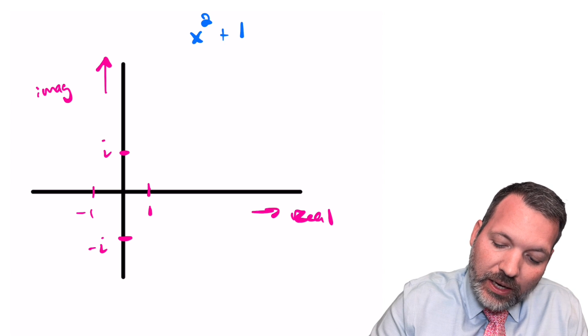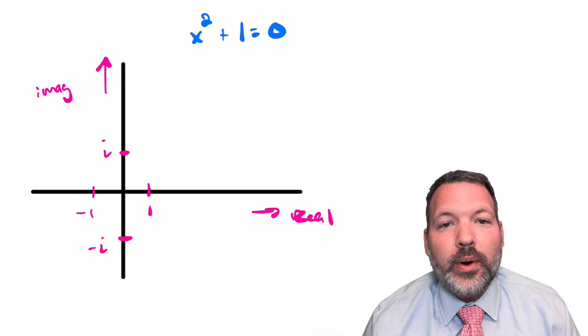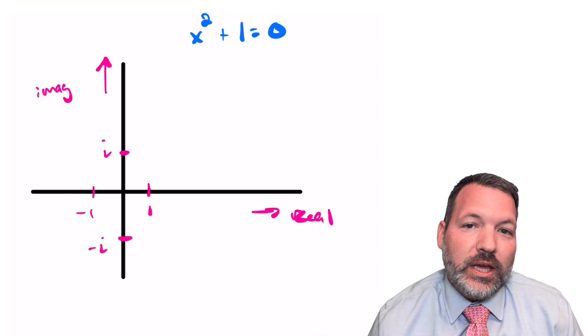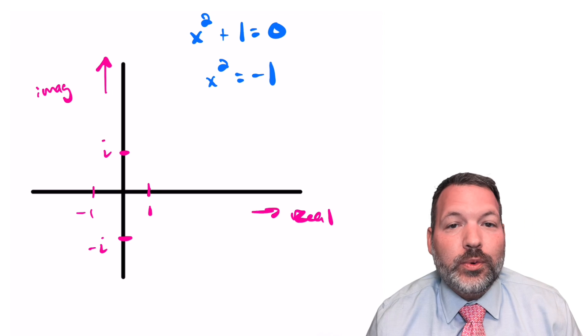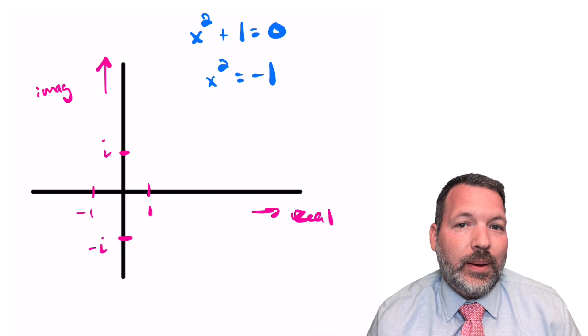Again, the imaginary number is the number that gives us solutions to equations like x squared plus one equals zero. Because what we're saying is there must be some square that equals negative one. Generally speaking, of course, this does not happen.